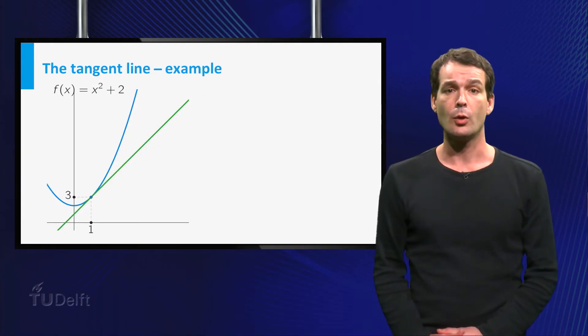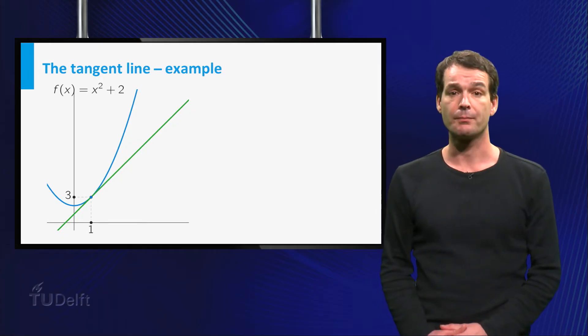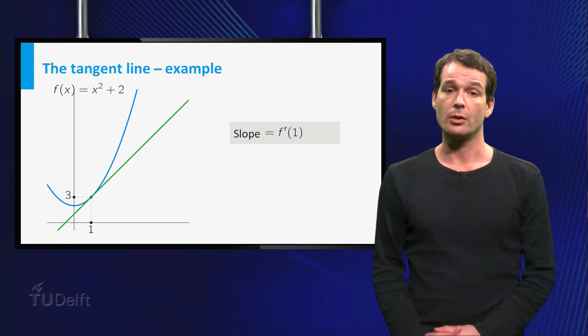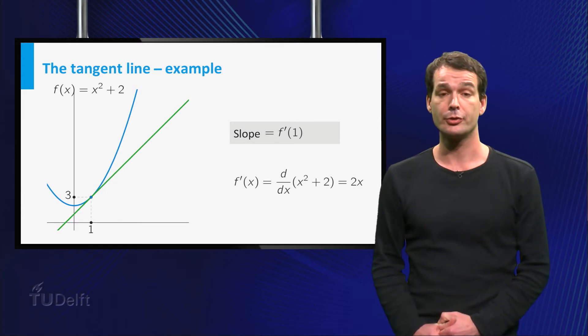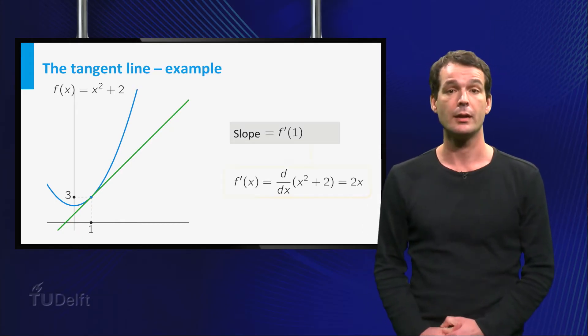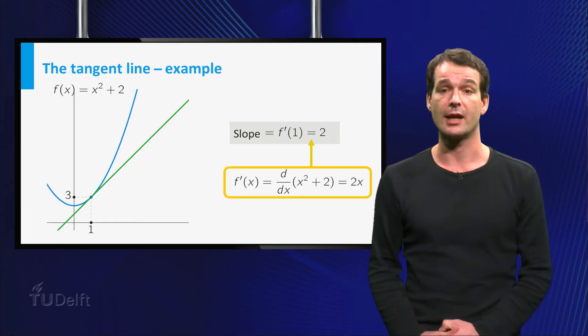First of all, we know what the slope of the tangent line should be. It must be the derivative of f at the point. So let's calculate the derivative. It is the derivative of x squared plus 2, which is 2x. Now we set x equal to 1 here, and we see that the slope of the tangent line is equal to 2.